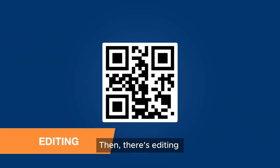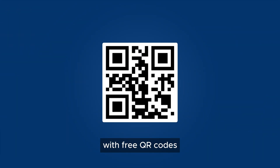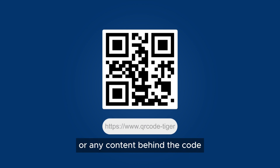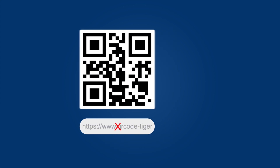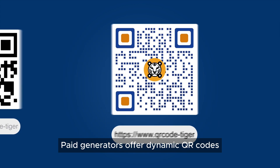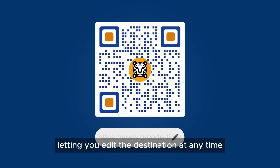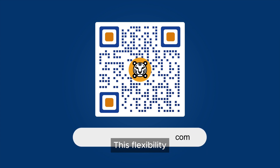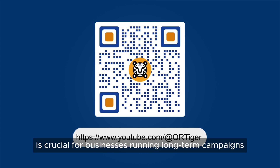Then there's editing. With free QR codes, what you create is final. If you need to change the URL or any content behind the code, you're out of luck. Paid generators offer dynamic QR codes, letting you edit the destination at any time without having to reprint anything. This flexibility is crucial for businesses running long-term campaigns.